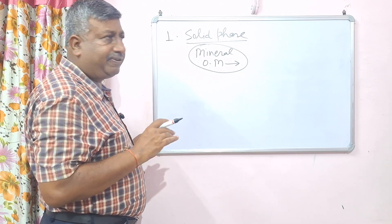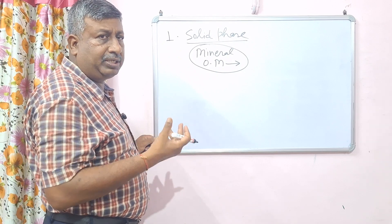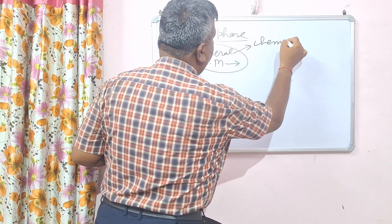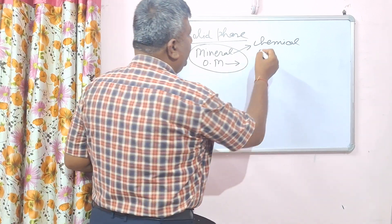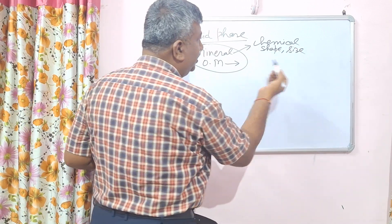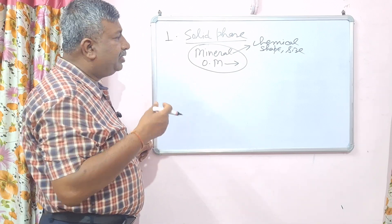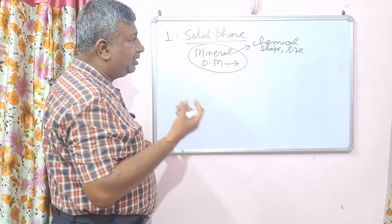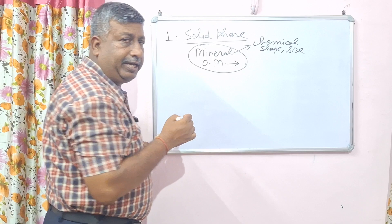The solid phase is very important from soil fertility and nutrient availability and nutrient retention points of view, because these minerals differ in their chemical composition, shape, size, and orientation. Similarly, organic matter varies in degree of decomposition, level of humus, and organic matter content.